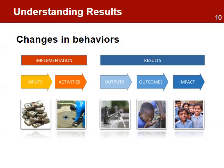Results arise from a cause-effect relationship — the relationship between inputs, activities, outputs, outcomes, and impact. This is the results chain that the project design defines in order to address the problems affecting the beneficiaries. Outputs are short-term results, outcomes are medium-term results, and impact is the long-term result.